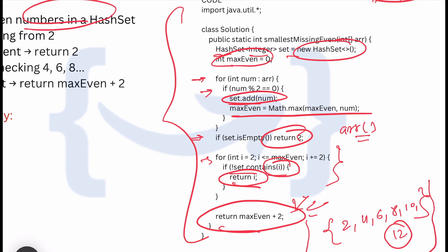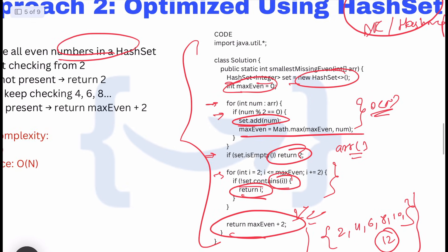We return maxEven plus 2. We calculate maxEven by iterating over the array, which costs O(n) time complexity. We'll get the maximum even number because we need a stopping point for our for loop. This logic looks good - try it yourself in your language.